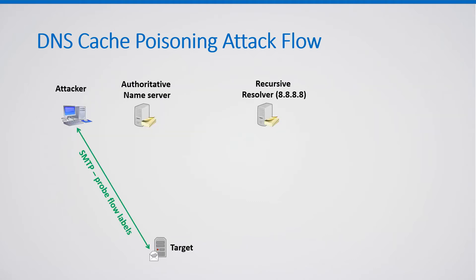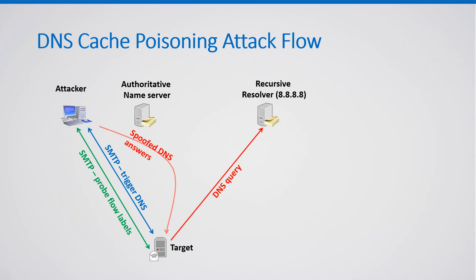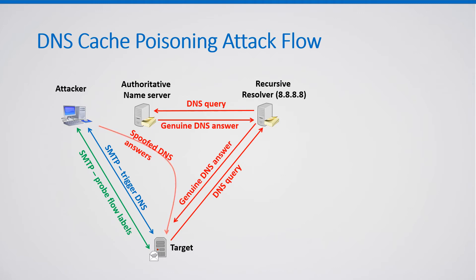The attack starts with the attacker probing the target machine over TCP-IPv6, collecting flow label values and extracting the pRandomU32 state. Then the attacker starts another SMTP session that triggers a DNS query — this can be done using DKIM, for example. The target's stub resolver sends a DNS query to the recursive resolver, opening the attack window. The attacker sends spoofed DNS answers as if coming from the recursive resolver, using the extracted state to replicate the UDP source port used in the original query. Since the stub resolver uses the first answer that matches the query and drops subsequent ones, the attacker can halt the attack once the genuine answer arrives.